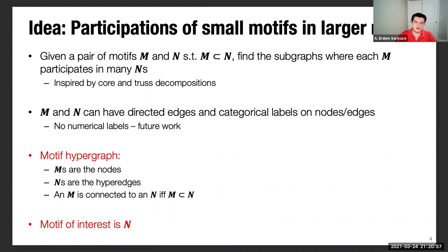This is inspired by the core and truss decompositions in simple undirected networks. In this context, both motifs M and N can have edge directions or categorical labels on nodes and edges. In this work, we do not consider the numerical labels like the weights. This is for future work. One important notion in this context is the motif hypergraph. We construct a hypergraph where the small motif instances form the nodes and the large motif instances form the hyper edges.